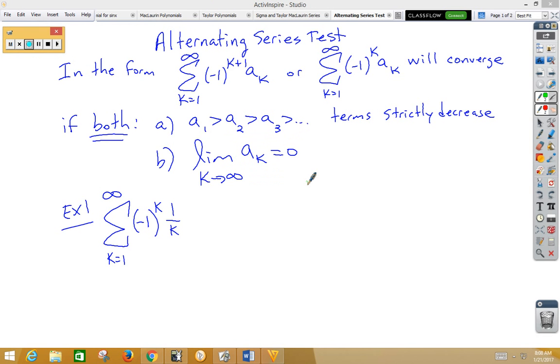In this video, we're going to talk about the alternating series test for convergence. An alternating series is in the form of this, where you've got a negative 1 to a power.